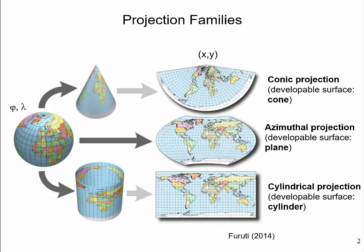A map projection transforms the spherical Earth's surface to a two-dimensional map plane. It uses mathematical formulas to convert geographical coordinates to flat, planar x, y or easting/northing coordinates. The surface onto which the ellipsoid or sphere is projected must be one that can unfold itself into a plane without distortion. Such a surface is called a developable surface, which can either be a cone, a cylinder, or a flat plane.